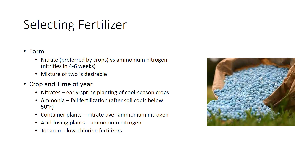Many acid-loving plants prefer ammonium nitrogen. Cranberries, for instance, essentially use only ammonium nitrogen. Some crops, including tobacco, are sensitive to chlorine. For these crops, low-chlorine fertilizers should be chosen.